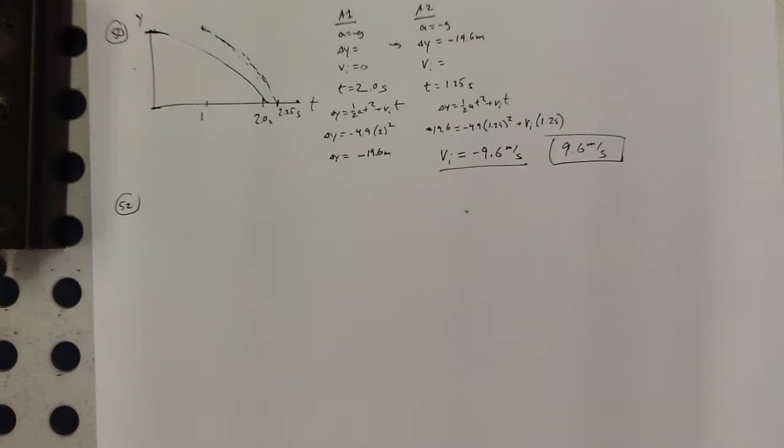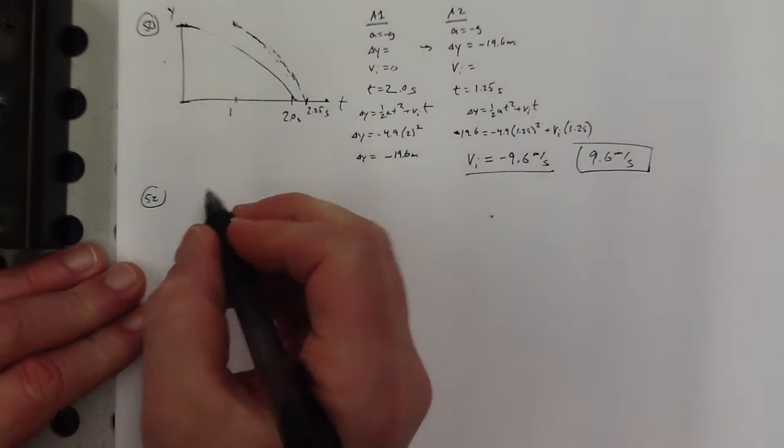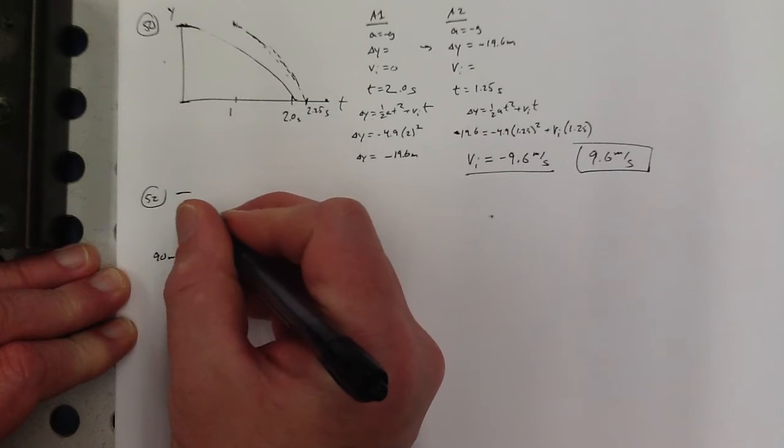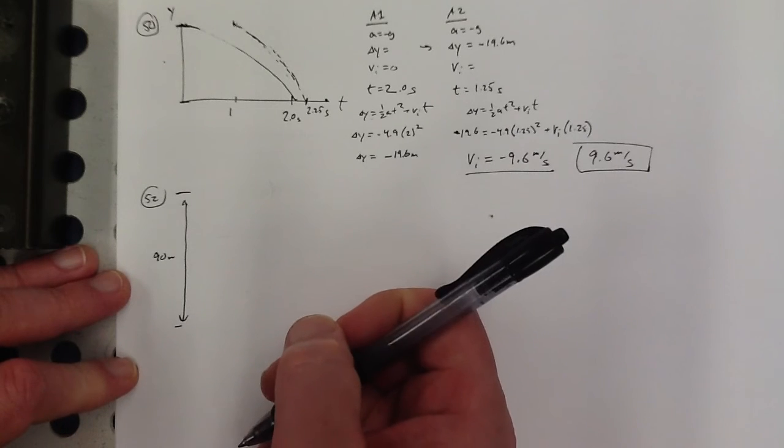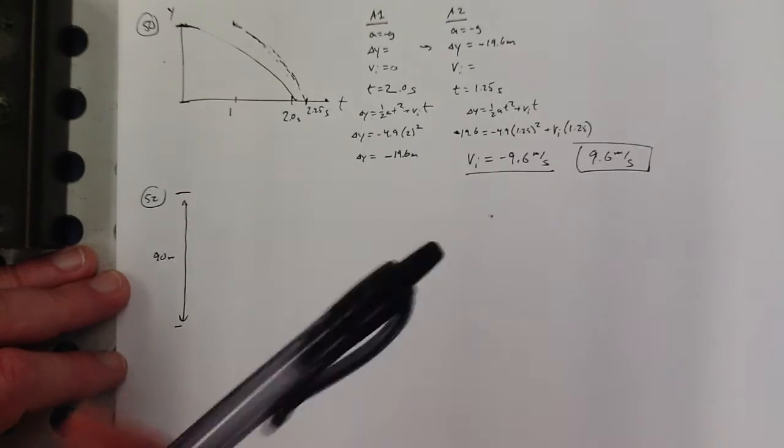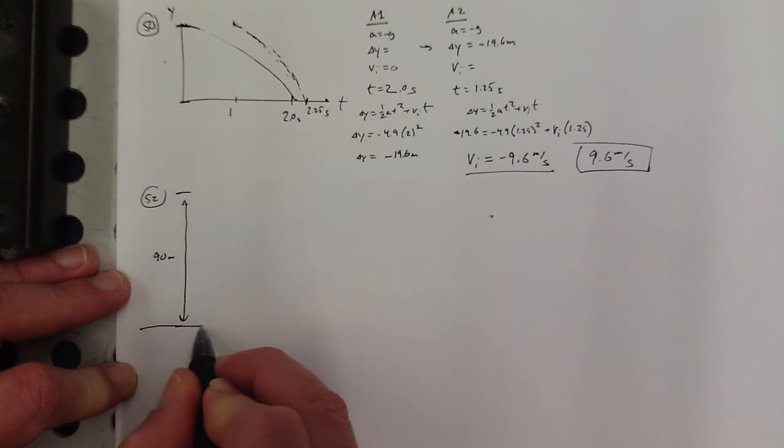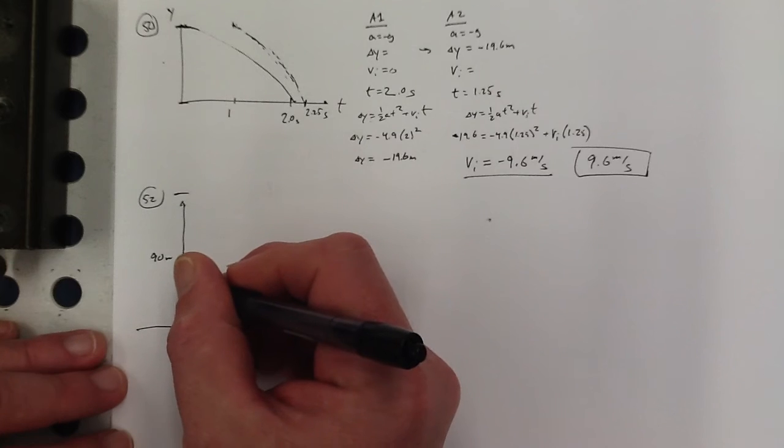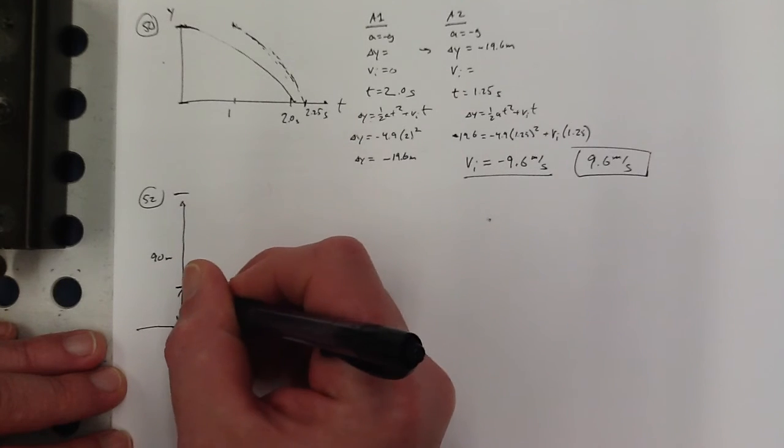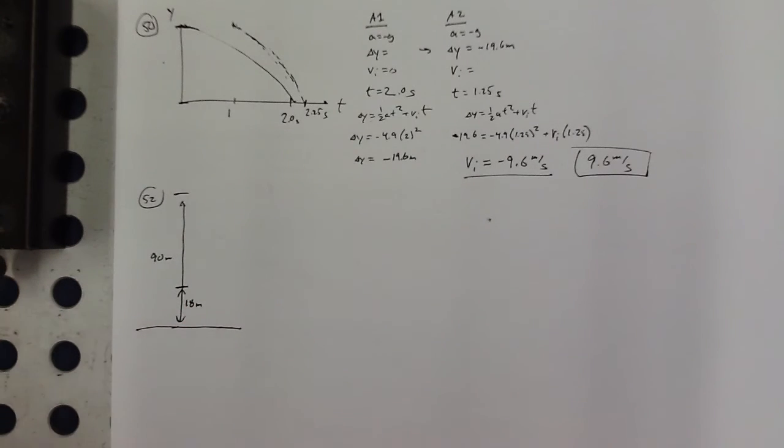A bolt is dropped from a bridge under construction. These people on these bridges need to be more careful. Falling 90 meters to the valley below the bridge. In how much time does it pass through the last 20% of its fall? What's its speed when it begins the last 20% and when it reaches the valley beneath the bridge? Okay. So, I got a 90 meter fall altogether. But we're interested in the last 20% of its fall. And I guess they mean the last 20% of the distance. You could debate that, or you could make the point that they should have been a little bit clearer here about whether they meant the last 20% of the distance or the time. So, I think they mean the distance. So, 20% of 90 is 18.